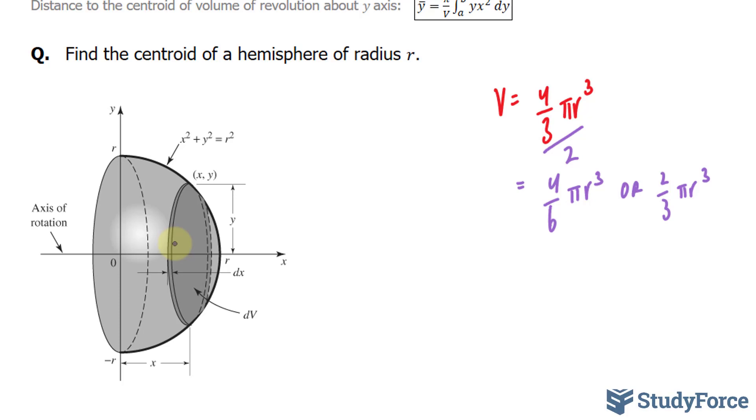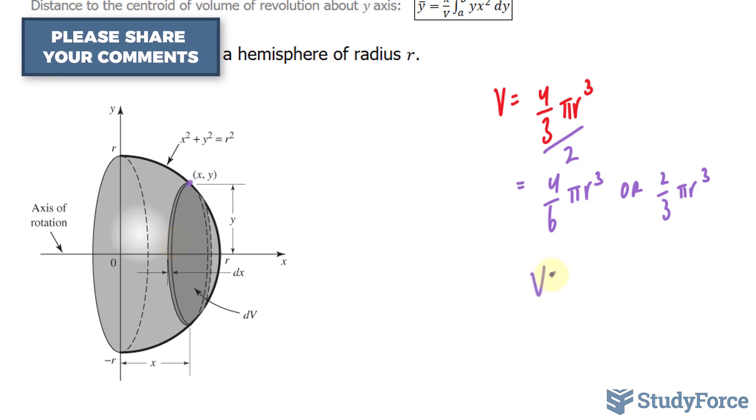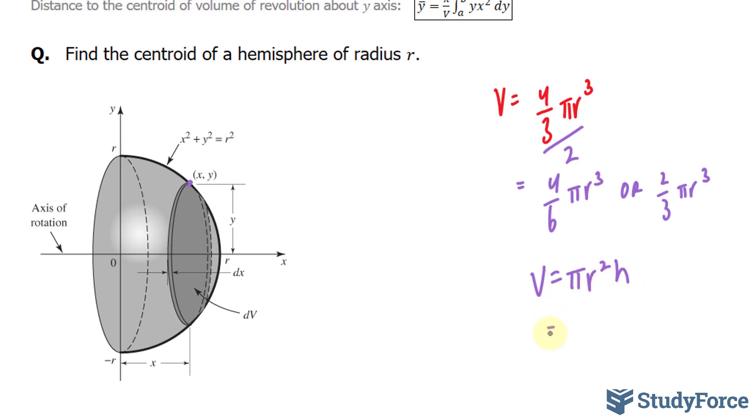If that didn't make sense to you, let's write the volume formula for a cylinder. V is equal to pi r squared h, where our r is the y, y squared. Our h, the height, is dx, as mentioned earlier, and it's also shown in the diagram, and dV is the volume.